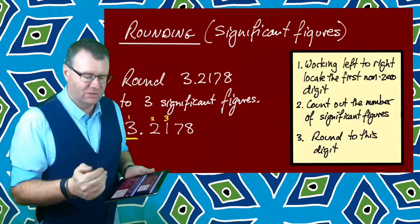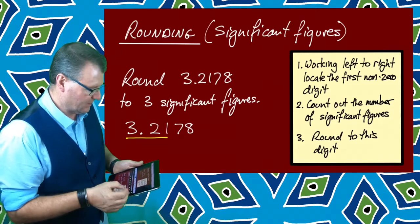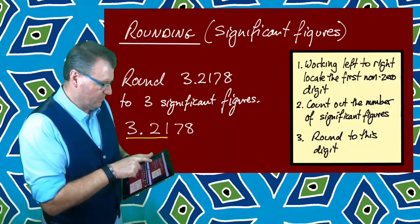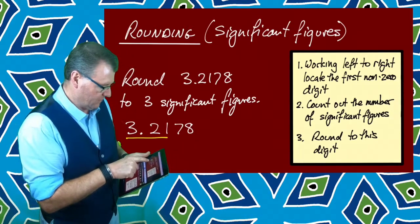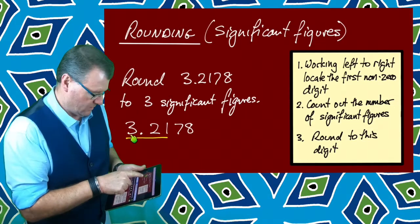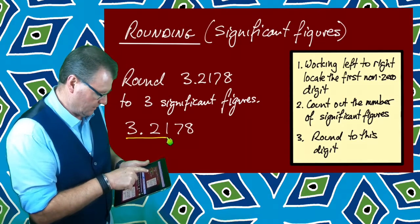From there that's where I do my rounding. So I'm taking the three significant figures. I came in from the left, stopped at the first non-zero, then counted out my three significant figures.